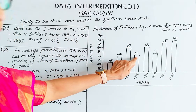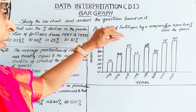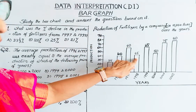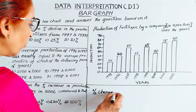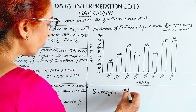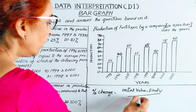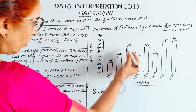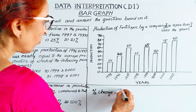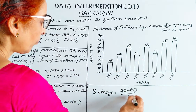The percentage decline formula is: final value minus initial value, divided by initial value, multiplied by 100. For 1997 and 1998: the value in 1997 is 60 and in 1998 is 45. So we calculate: 45 minus 60, divided by 60, into 100.